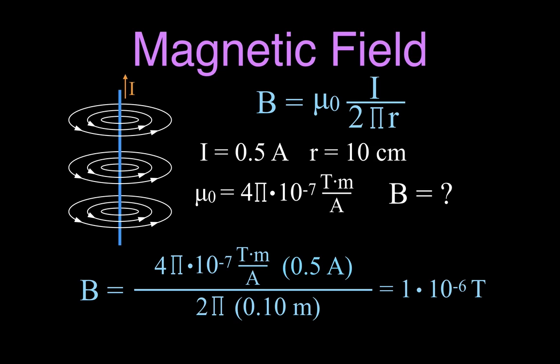In a previous video, linked in the upper right-hand corner, I went through more of an explanation about the current carrying wire and its magnetic field. I had noted that this was 1.0×10⁻⁷ — that was actually incorrect. It should be 1.0×10⁻⁶.